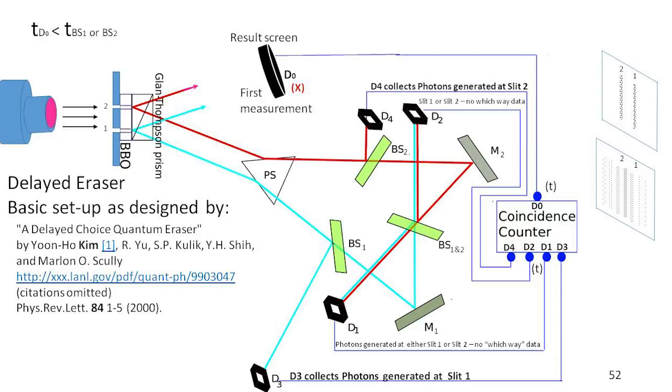Because the only way to get a particle in D3 is to go through slit 1. Or if it transmits through beam splitter 1, it hits a mirror M1, and then has an equal probability of ending up in D1 or D2, just the same way we had before.